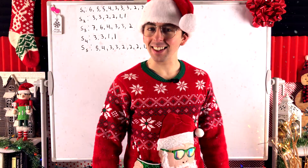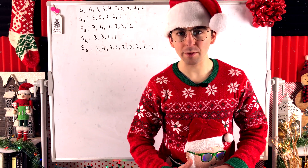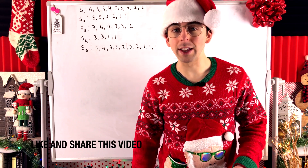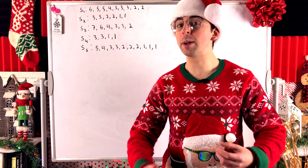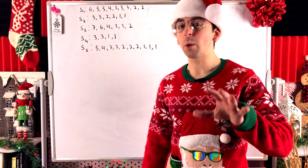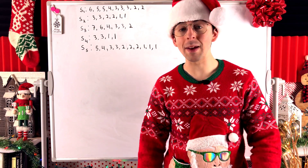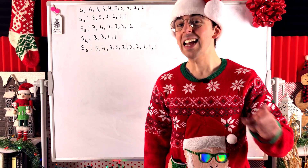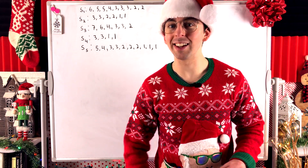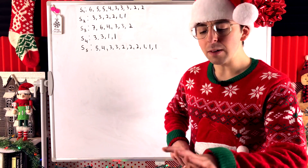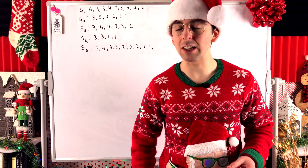In today's lesson, we'll be taking a look at five sequences and determining which ones are graphical — meaning which ones are the degree sequence of some graph. There's a very powerful theorem we can use to determine whether or not a sequence is graphical, but we're going to use more elementary methods to get a good feel for the basics. We will introduce the theorem for our last sequence and prove it in a future lesson. If you need an intro to degree sequences, check the description for a link.